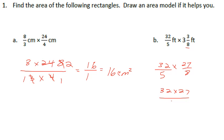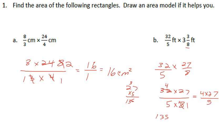Rewriting as a fraction: 32 times 27 over 5 times 8. I can see 8 goes into 8 one time, and 8 goes into 32 four times. That leaves 4 times 27 over 5, which is 108 over 5. Now 27 times 4 is 108 — wait, 4 times 27 is 108. Actually computing: 135 over 5. Long division: 5 goes into 13 two times giving 10, remainder 3, bring down 5; 5 goes into 35 seven times. The answer equals 27.